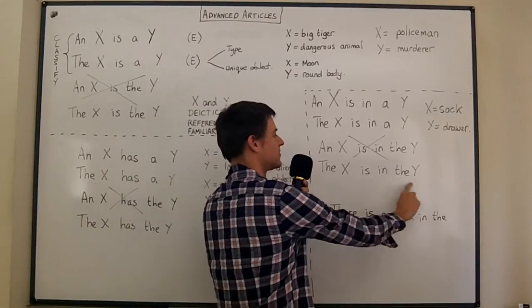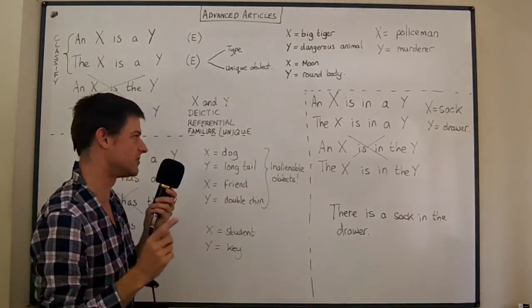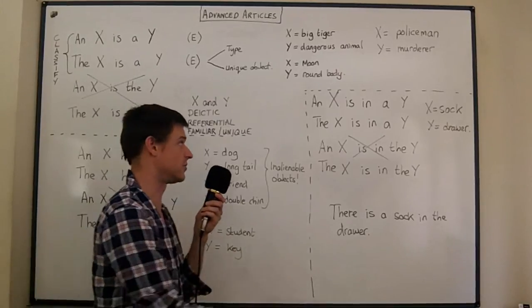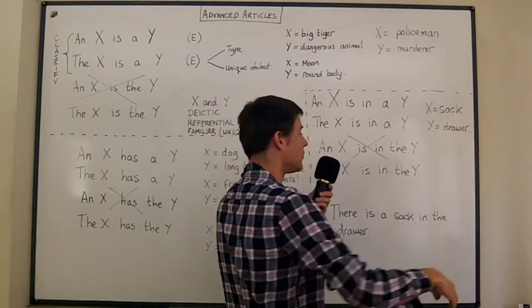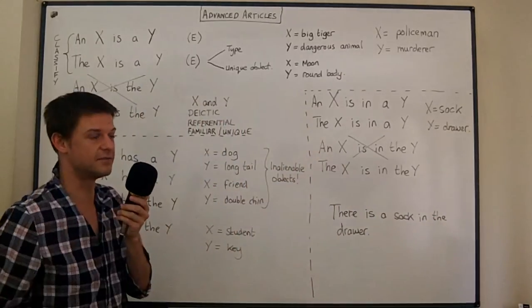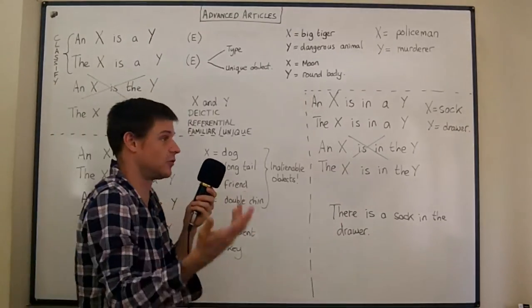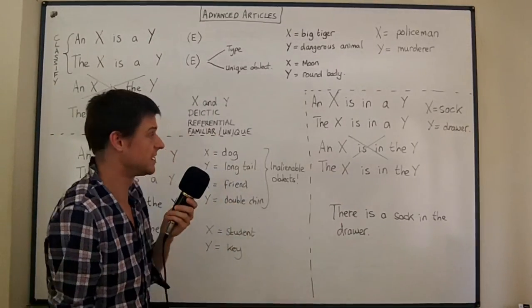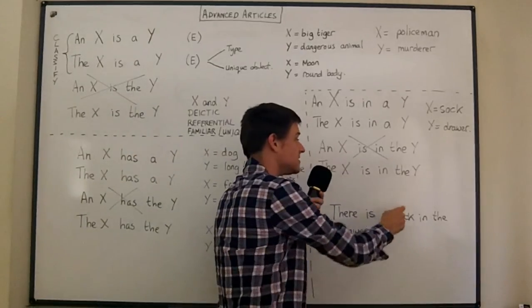Lastly this is what your wife would say if she knows exactly which drawer it is and she's going to describe which drawer it is. The sock is in the drawer in the middle of the chest of drawers, or the top drawer of the chest of drawers. If she knows which drawer then she would say the drawer.